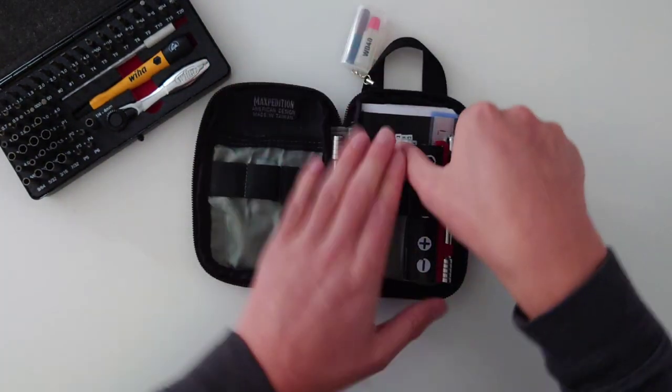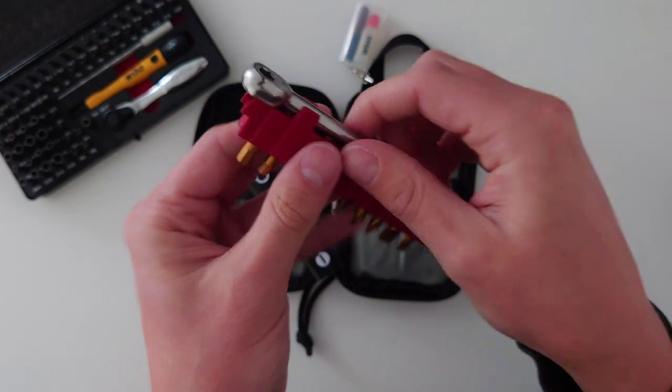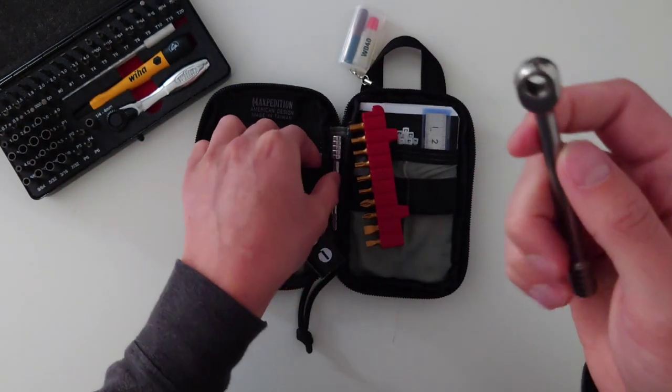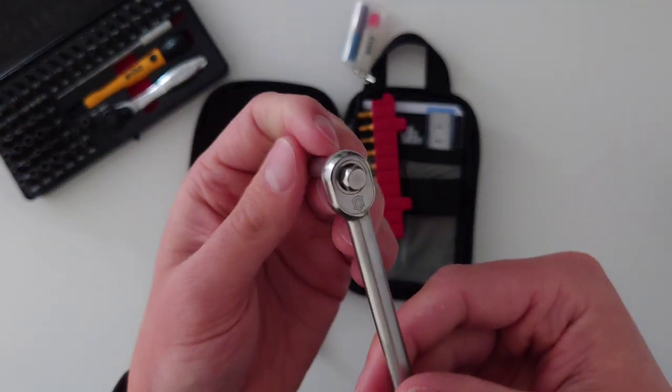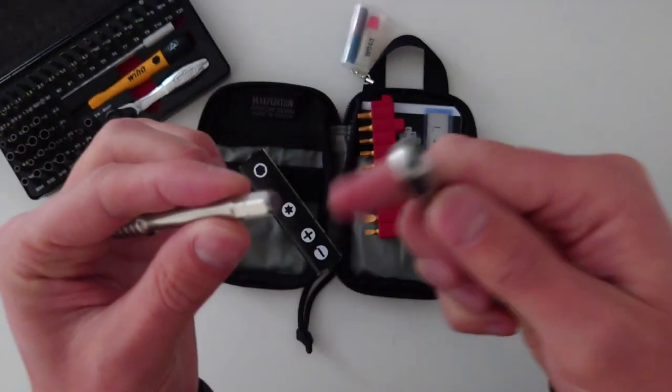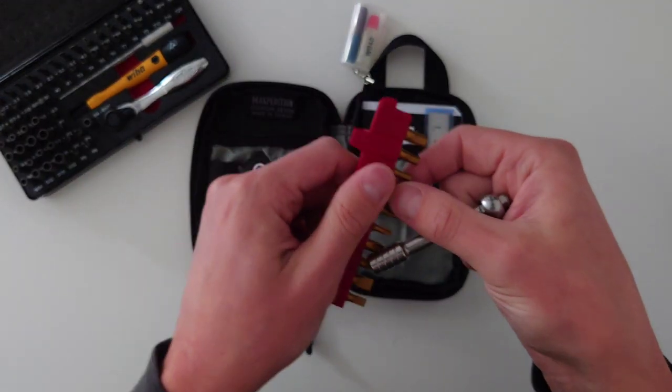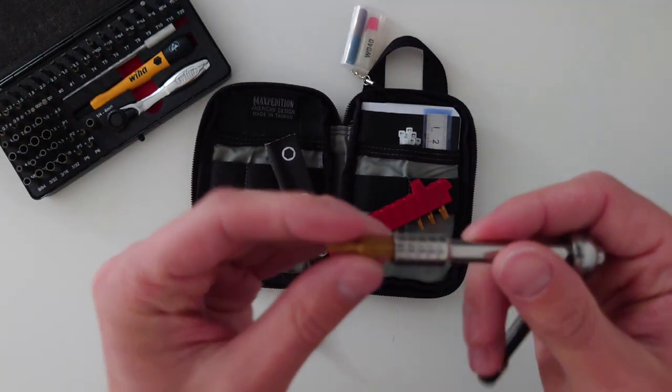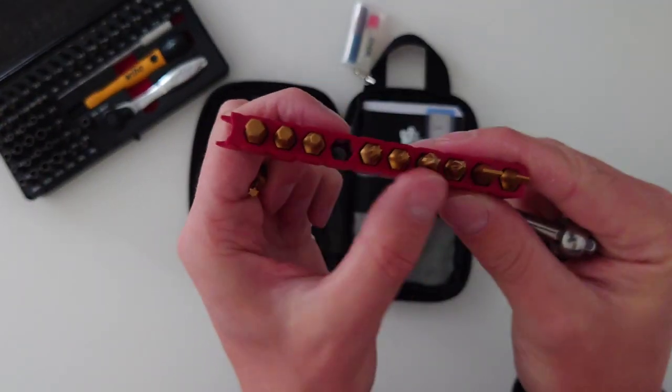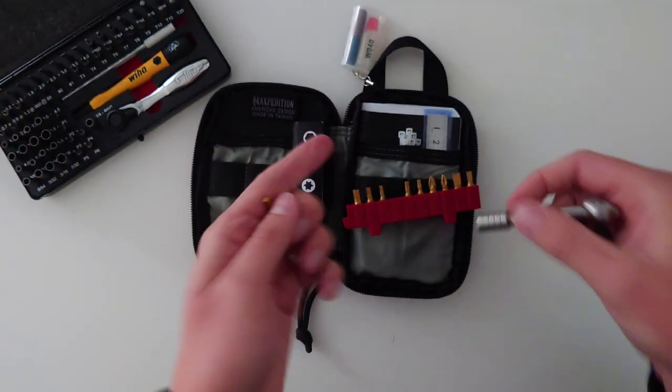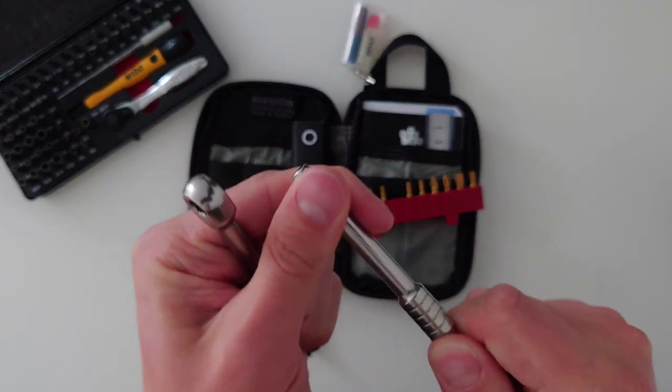The next thing is my Victorinox ratchet and tool set. This is a classic Victorinox ratchet that you usually get with the Spirit X series. And I've also got the extender that sits in the top. One of the slightly annoying things about this is the fact that you have to take the extender out and turn it around if you want to screw or unscrew. It hasn't been particularly problematic for me.